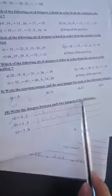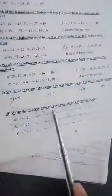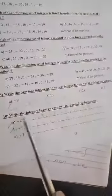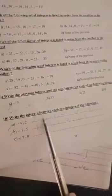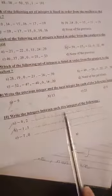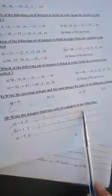Question 10. Write the integer between each two integers of the following. I want to give numbers between negative 4 and 2. Let's go backward. From negative 4, let's go backward on the number line. Negative 3, negative 2, negative 1, 0, and 1.